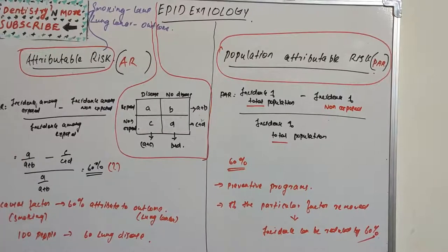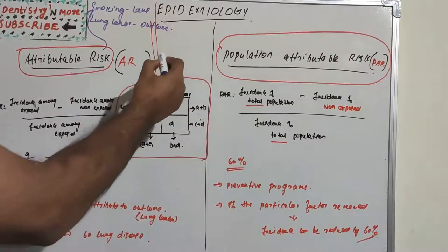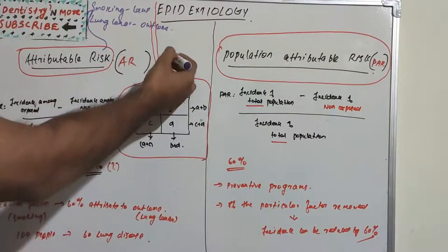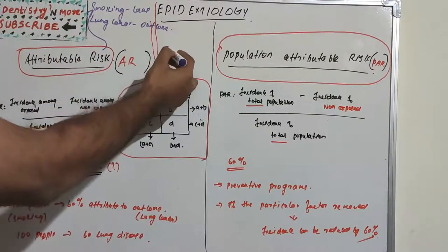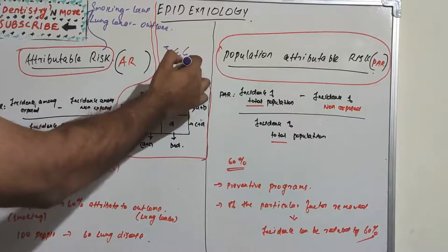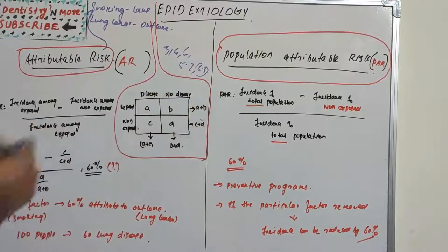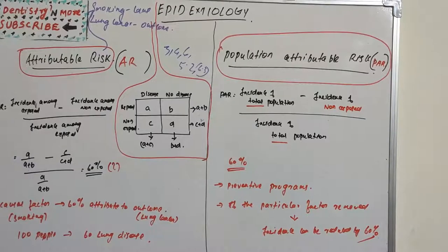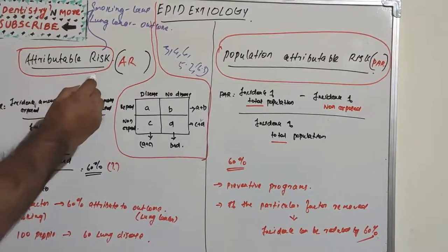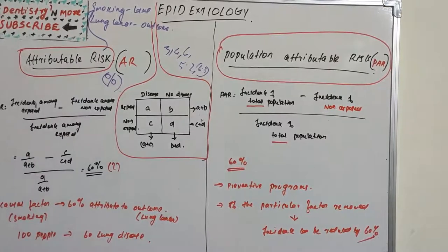Relative risk compares incidence in exposed versus non-exposed groups and is expressed as a number — for example, 3, 4, 5.2, or 6.3. Attributable risk, by contrast, is expressed as a percentage, and the formula is different.